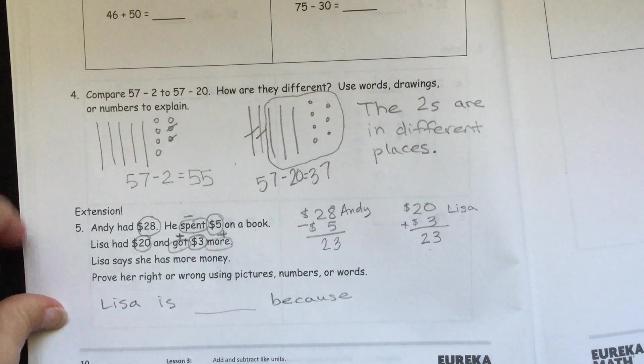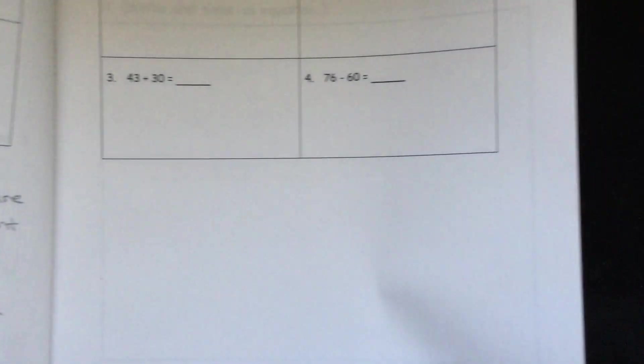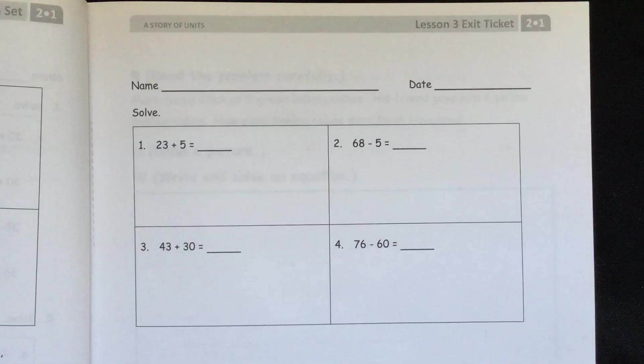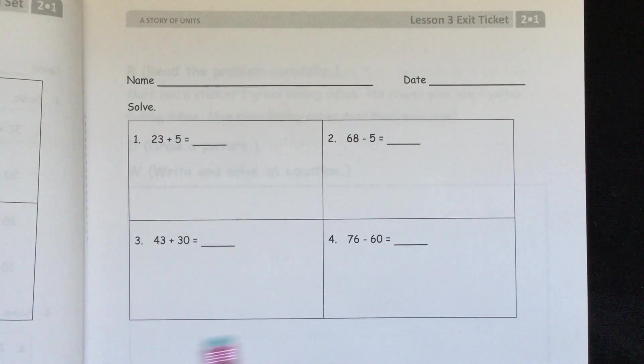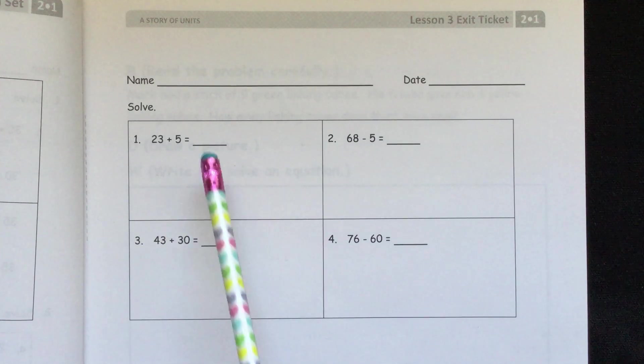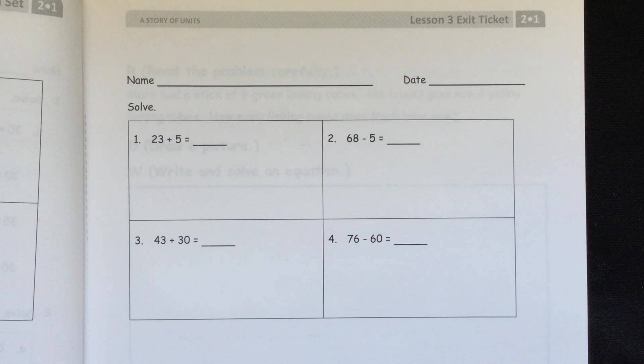On your exit ticket, I'm not going to do the exit ticket because your teacher is going to want to see that you know how to do all this on your own after all this practice and the problem set. So it just says solve. So you can draw your 10s and 1s or you could line it up vertically or however best works for you. And you write your answers on the line and you'll give that to your teacher. I hope this was helpful. Bye.